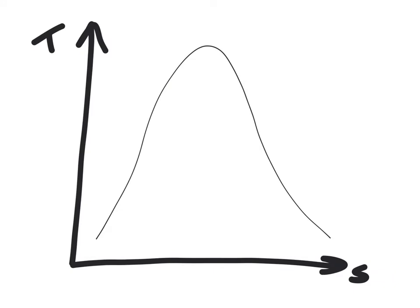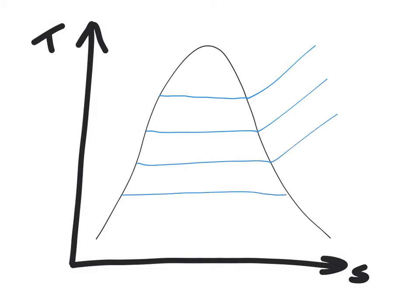I have my vapor dome drawn on my TS diagram, and I'll start where we normally start — before the first turbine. I have seven states: seven, eight, nine, ten, and eleven all coming out of my turbine, so all those are going to be on different pressure lines. Let me draw those lines — one for seven, one for eight, one for nine, one for ten, and one for eleven. Since seven through ten are superheated and eleven is in the vapor dome, I'll place ten and then eleven right below it. It's an ideal Rankine cycle so everything is isentropic — straight down between each stage of the turbine.